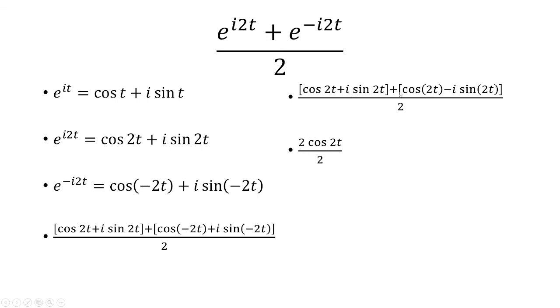i·sin(2t) + (-i·sin(2t)) is 0. That's going to be all over 2. The 2s are going to cancel, and I'm left with cos(2t) as my final answer.